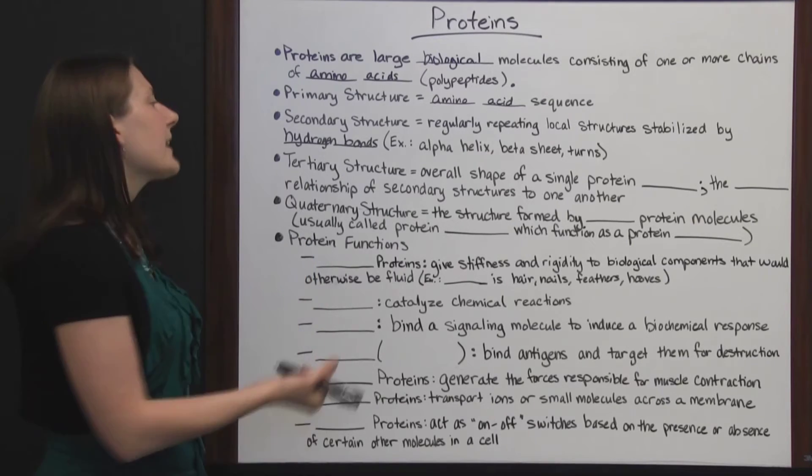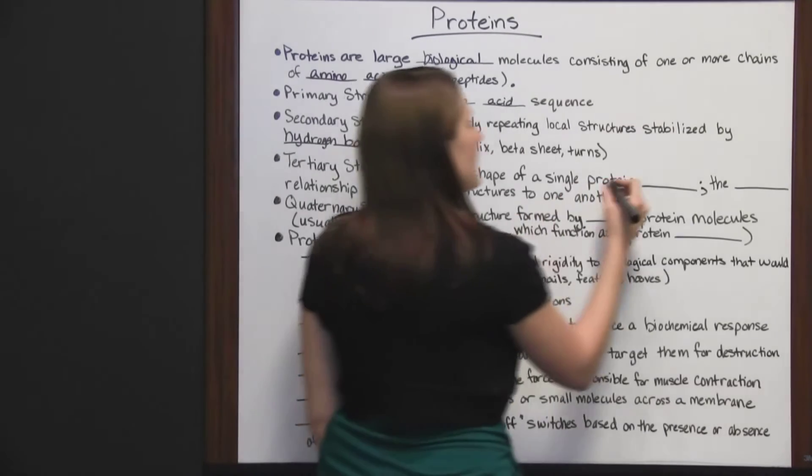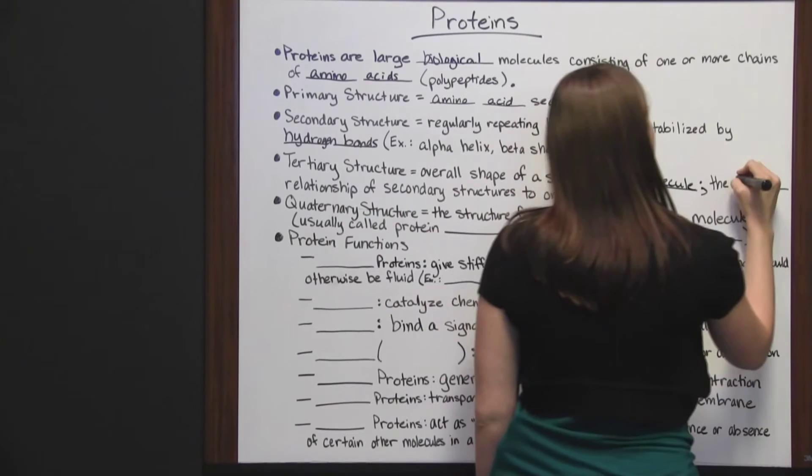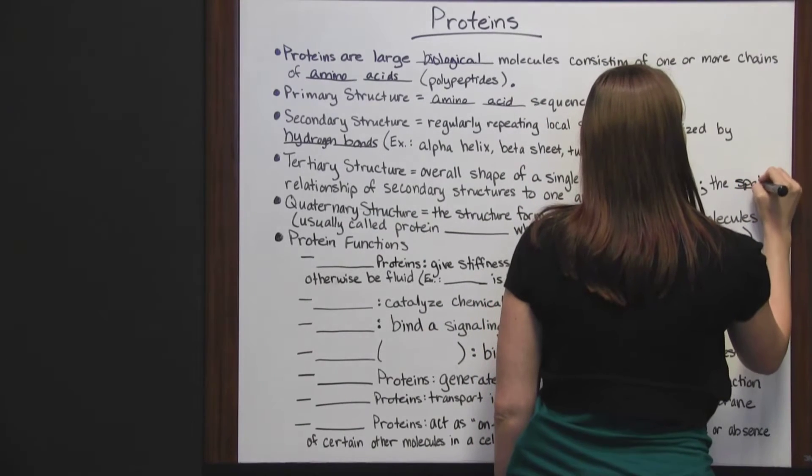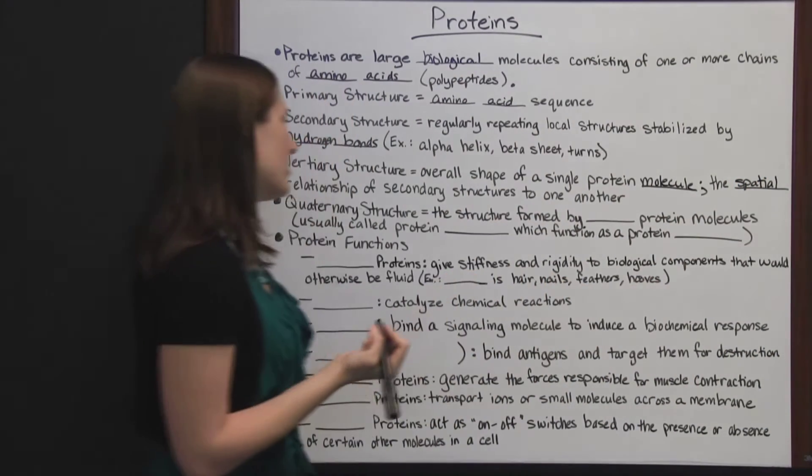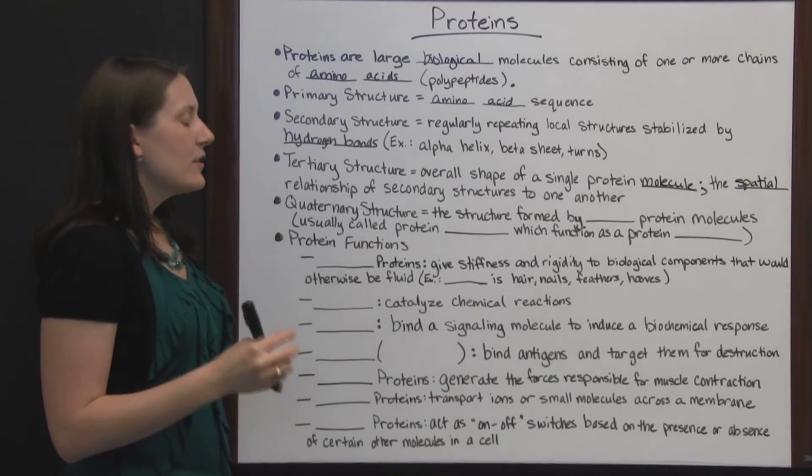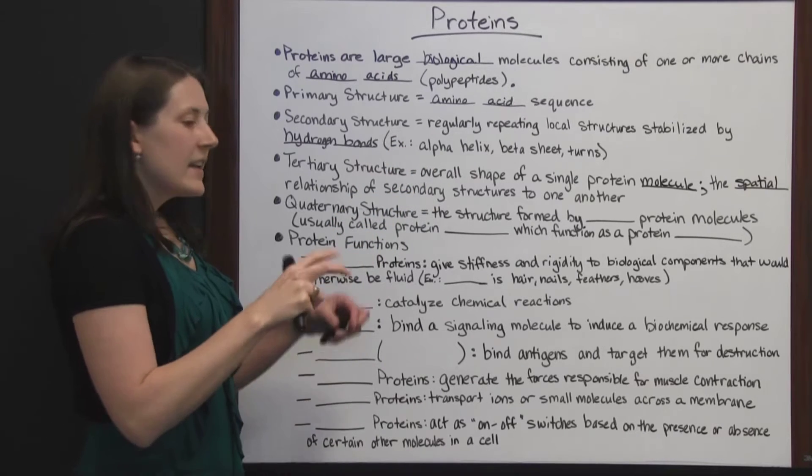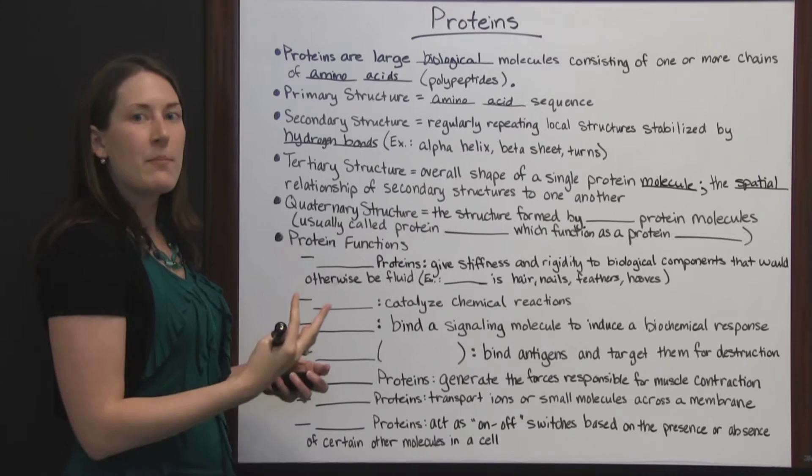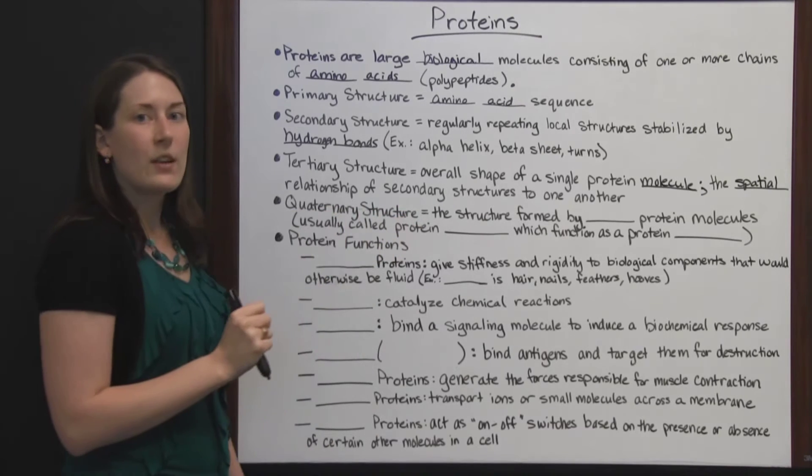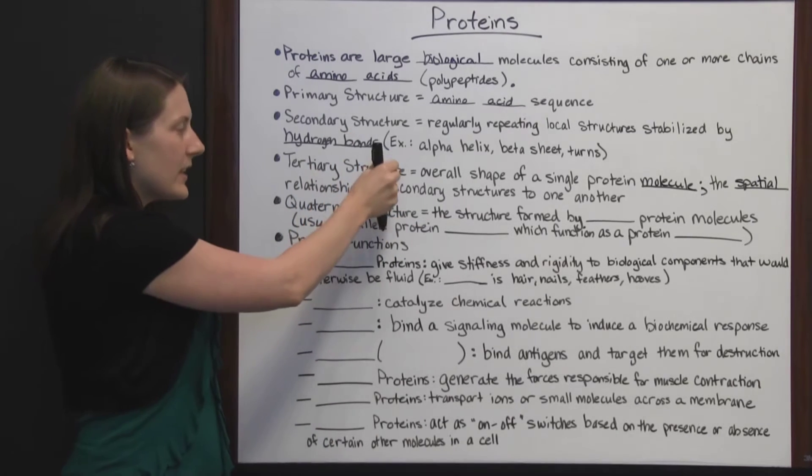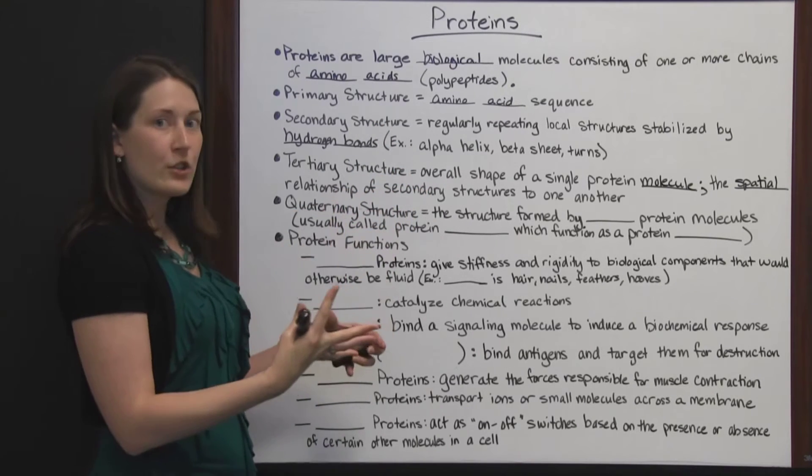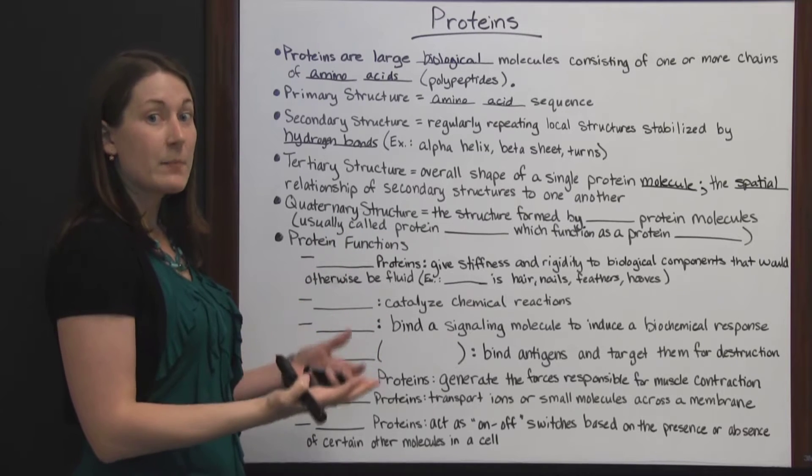The tertiary structure is getting more complex. It's the overall shape of a single protein molecule, so enough proteins have joined together to make a whole molecule. The tertiary structure is referring to the spatial relationship of secondary structures to one another. You've got your alpha helices, your beta sheets, and your turns. It's how they interact together and what kind of shape they all form whenever they form into a single molecule. You've got proteins joining together and then more proteins with hydrogen bonds joining together into a larger molecule and what that molecule looks like spatially.